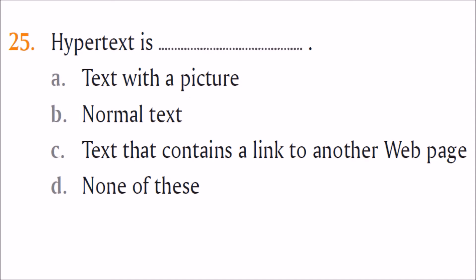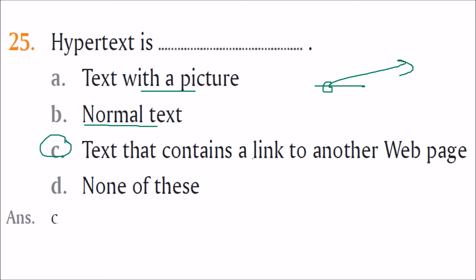Hypertext is text that contains a link to another web page. It can also be an image — when you click it, it takes you to another page via an anchor tag with an href attribute pointing to a destination. So the answer is C: hypertext is text that contains a link to another web page.